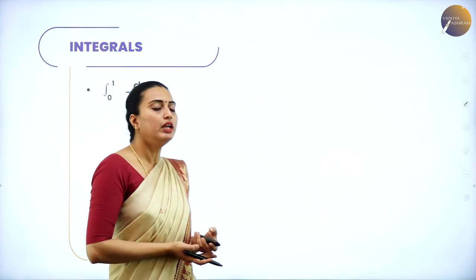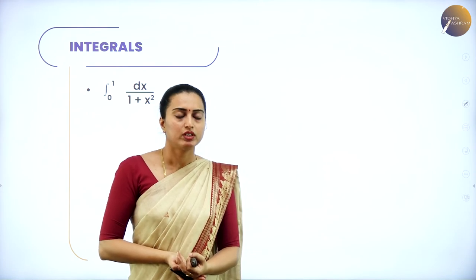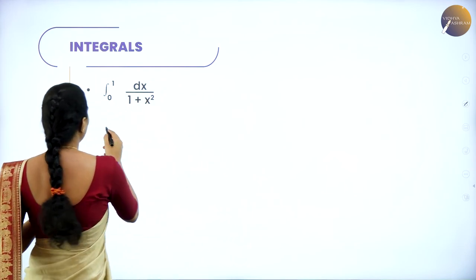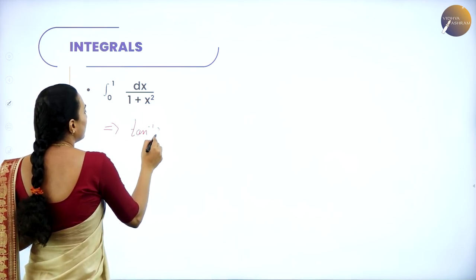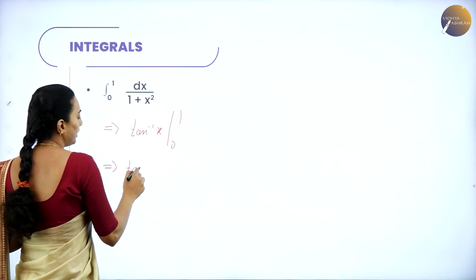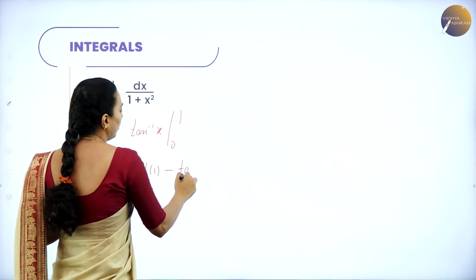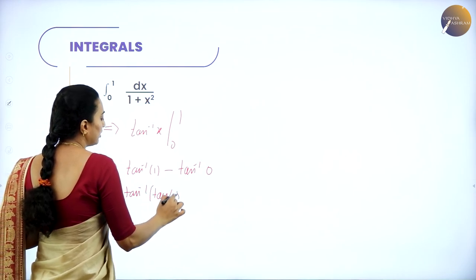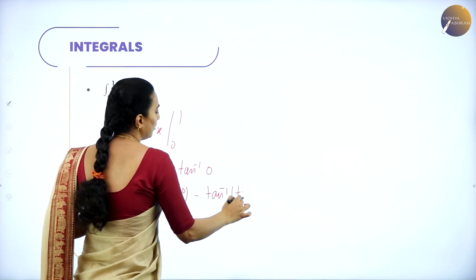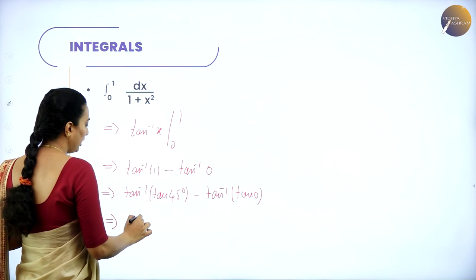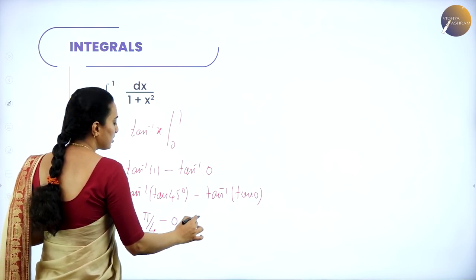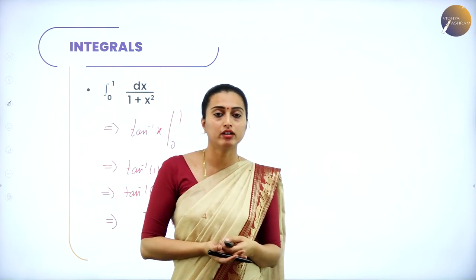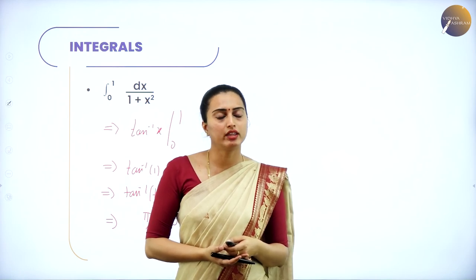The next problem is: integral from 0 to 1 of dx/(1 + x²). This is in the form whose integral is tan⁻¹(x). So the answer is tan⁻¹(x) from 0 to 1: tan⁻¹(1) - tan⁻¹(0) = 45° - 0° = π/4. The final answer is π/4.